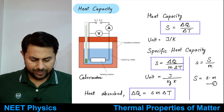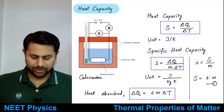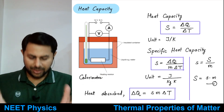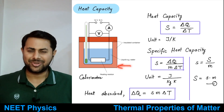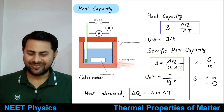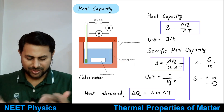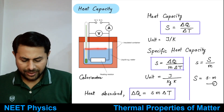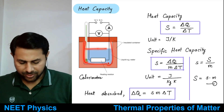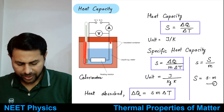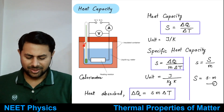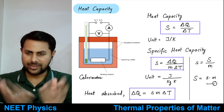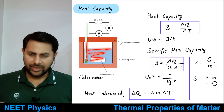To find heat capacity, we put the substance in a device known as a calorimeter. It is a container generally made of an insulating material like wood — a wooden vessel with a wooden lid so that no heat escapes. Inside the wooden container, there is another container, generally with vacuum between them, and a steel flask or steel vessel inside.